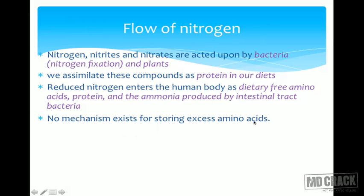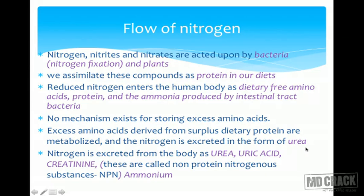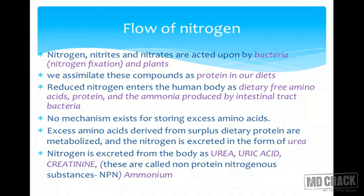No mechanism exists in our body for storing excess amino acids. Excess amino acids derived from surplus dietary protein are metabolized and the nitrogen is excreted in the form of urea. Nitrogen is excreted from the body as urea, uric acid, or creatinine — these are called the non-protein nitrogenous substances or NPN — plus ammonium.